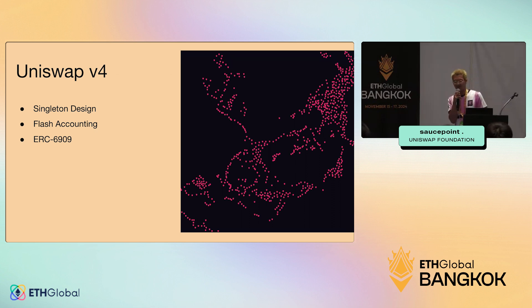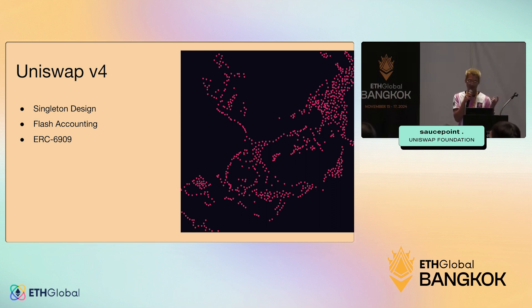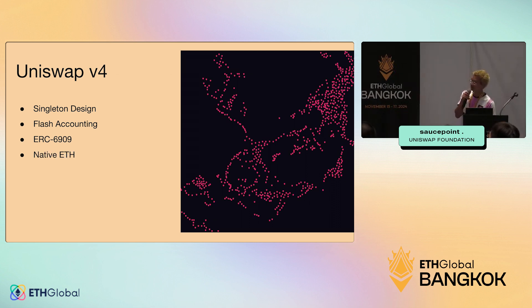ERC-6909 is essentially a wrapper for ERC-20s. It allows you to keep your ERC-20s within the core contract and efficiently trade value back and forth. It's really useful for MEV bots or high-frequency traders.